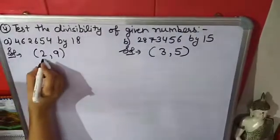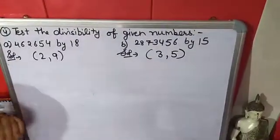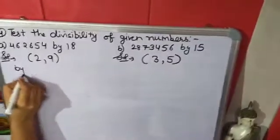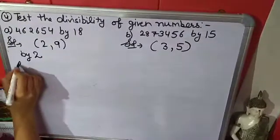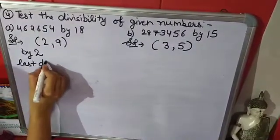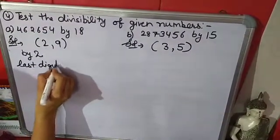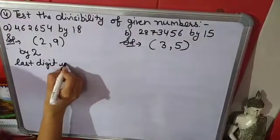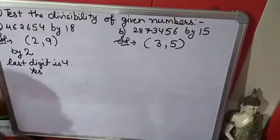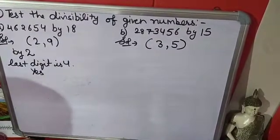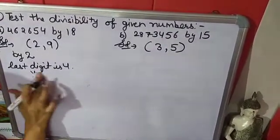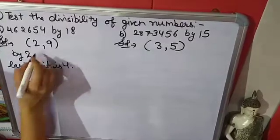First, we will check if it is divisible by 2 or not. The last digit is 4, so yes, it is divisible by 2.